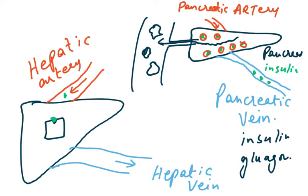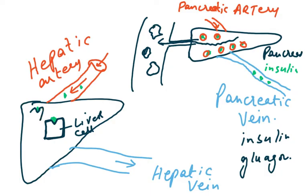From the vein, it goes to the inferior vena cava, then to the left side of the heart, into the aorta, and from the aorta arises the pancreatic artery, which brings these hormones back. Now, how does insulin know it has to work in the liver? Because there are receptors on the liver cells. The insulin attaches to these receptors on the liver cell, and then glucose is converted into glycogen, which is stored in the liver. So the pancreas is a gland producing insulin and glucagon.